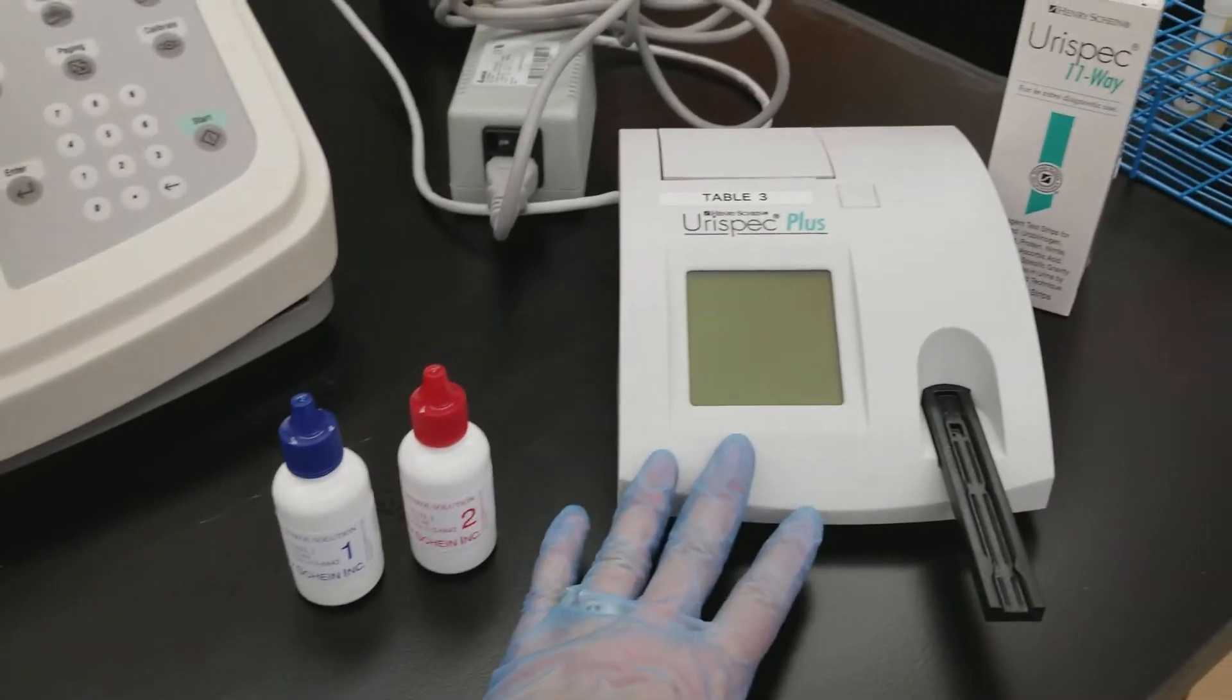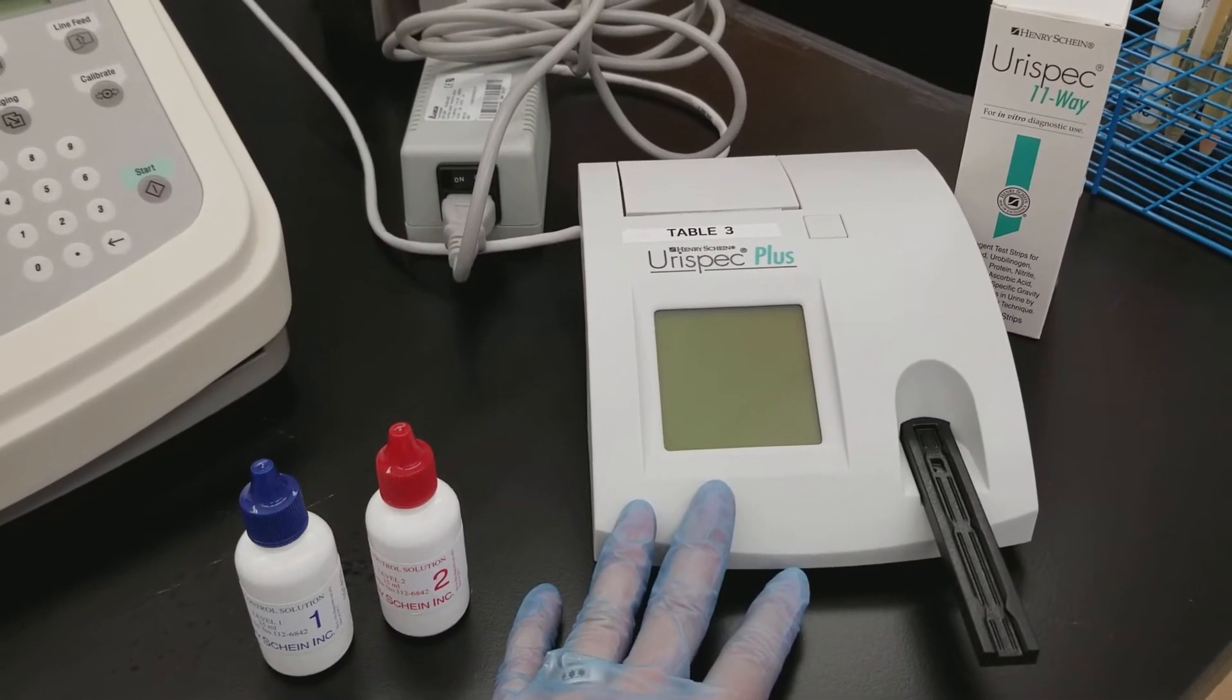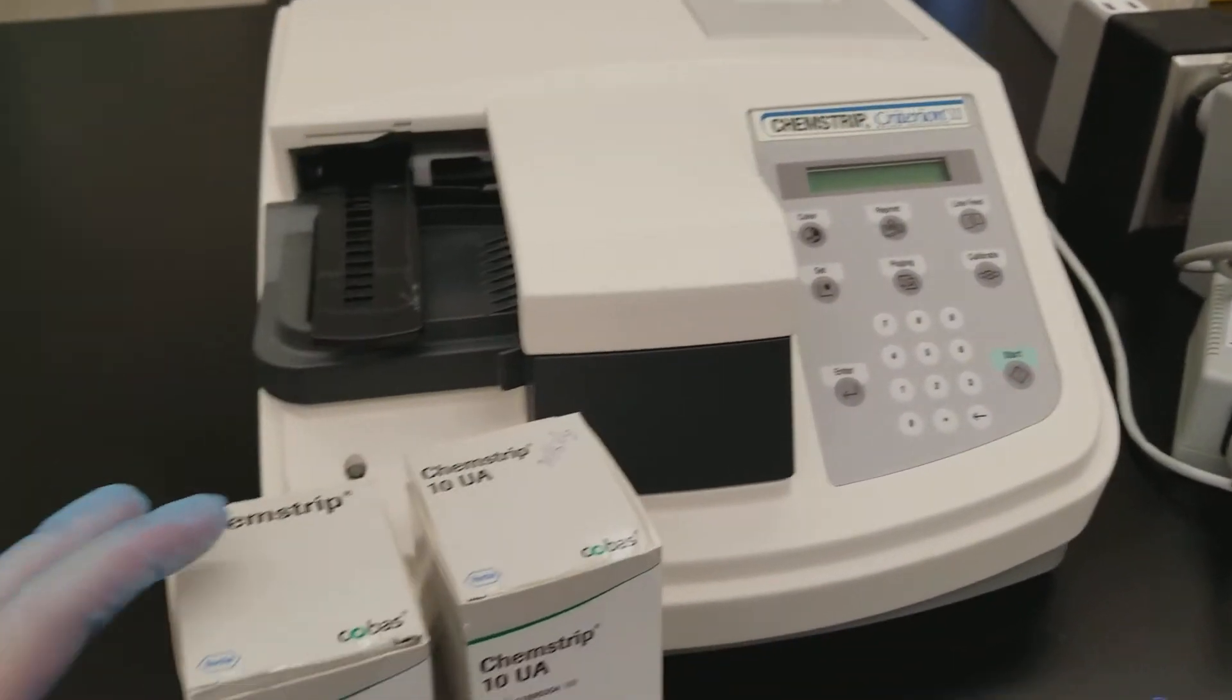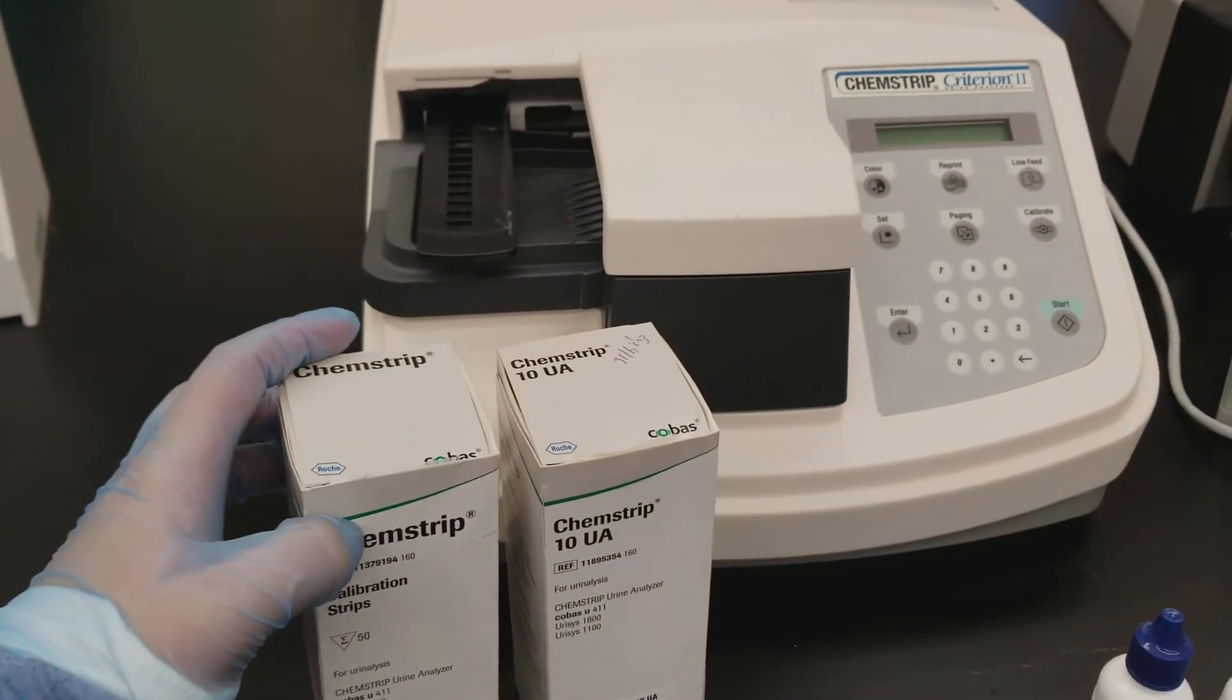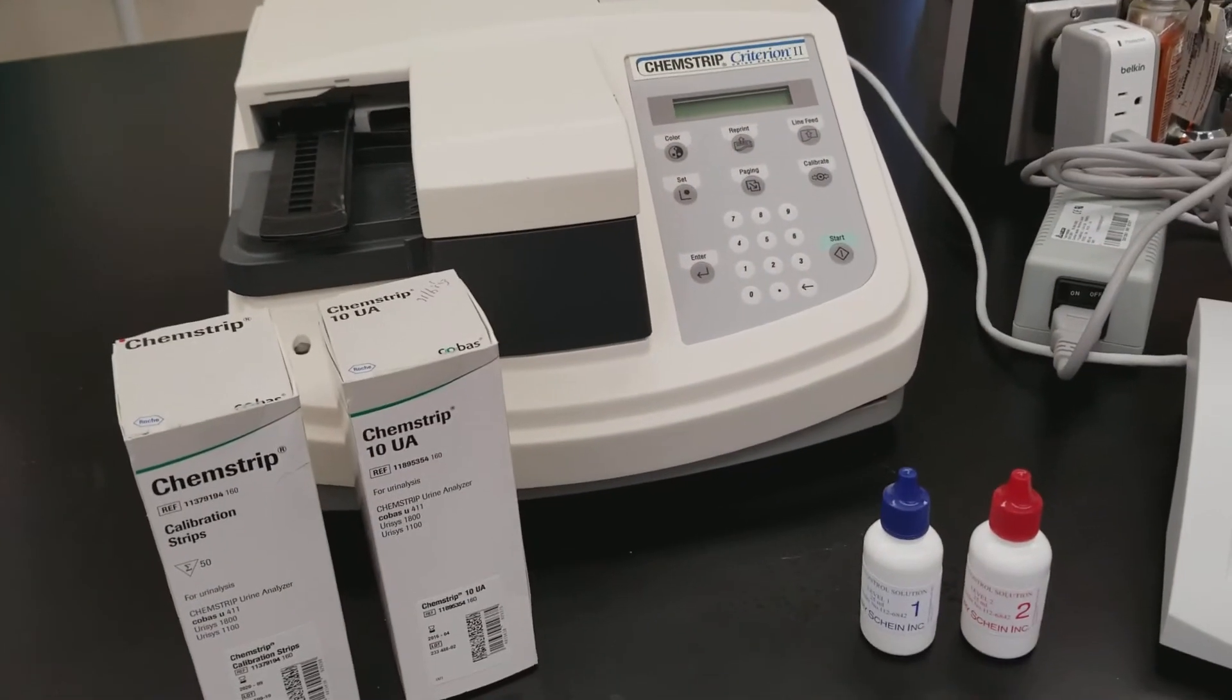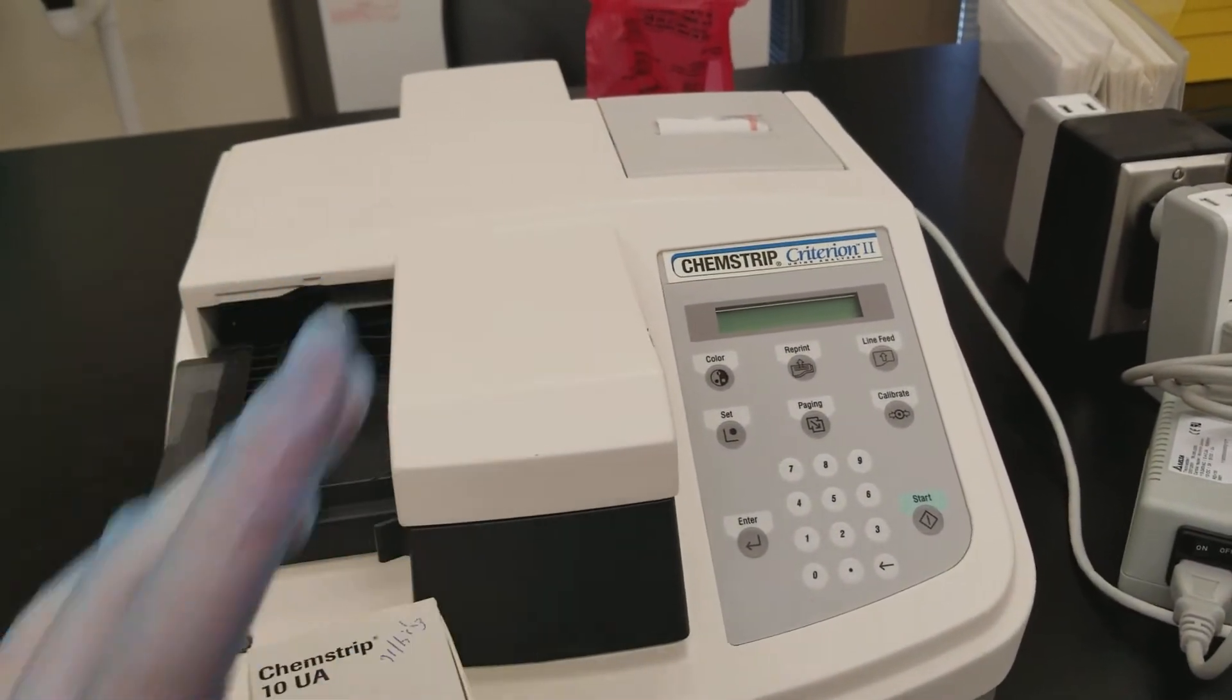The Urus back here does an internal calibration every single time you use it, whereas the Criterion 2, you have to do calibration using strips that you do not dip into anything. They're just dry strips and you would need to do that anytime you turn this on or a new lot number or anything like that.